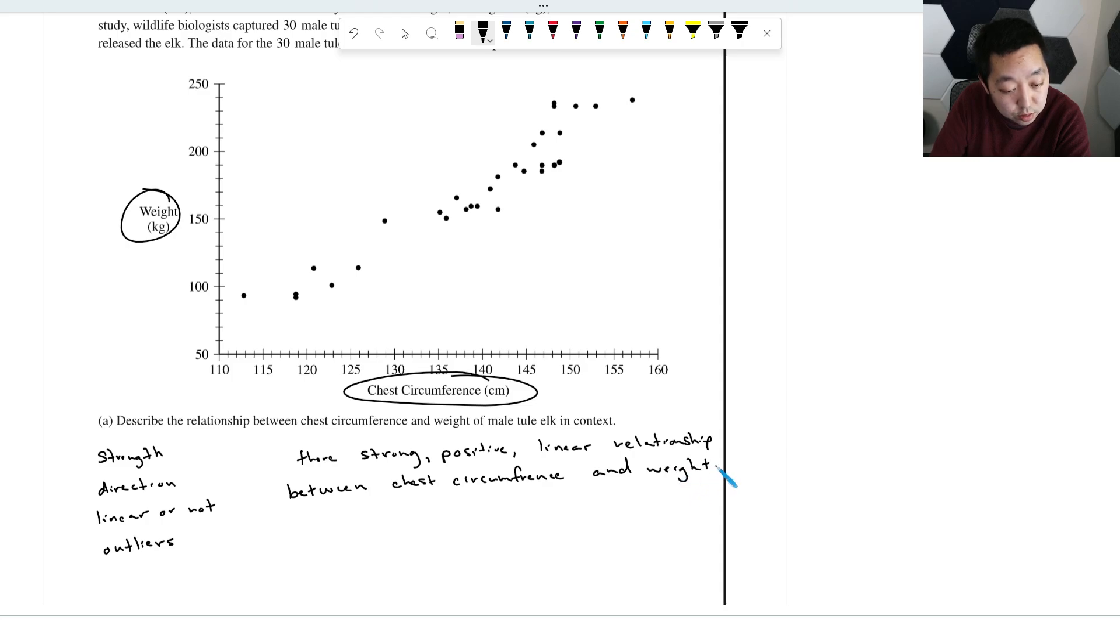There are no apparent outliers. Are there any data points that I'm missing? Nope, no apparent outliers.